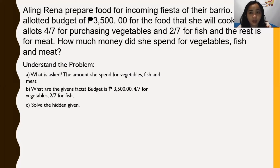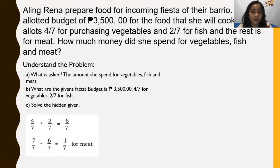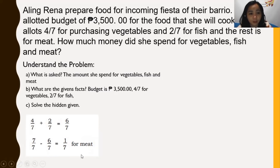Now let us solve for the given part that goes for meat. We have 4/7 plus 2/7 equals 6/7. So what is left out of one whole is 1/7. Therefore, 1/7 is the part allotted for meat.